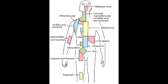What is the primary lymph node drainage site for the scrotum? The scrotum drains into the superficial inguinal lymph nodes. What is the primary lymph node drainage site for the superficial part of the thigh? The superficial part of the thigh drains into the superficial inguinal lymph nodes.